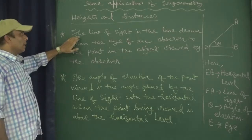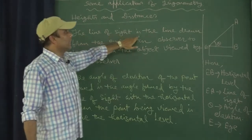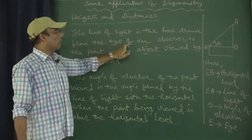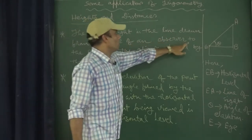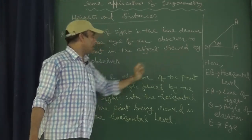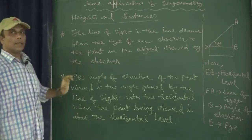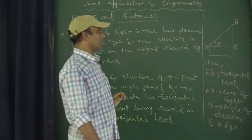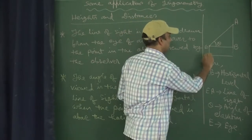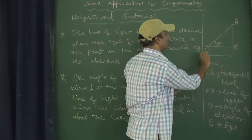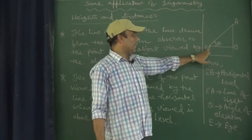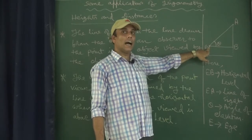First, let us understand the line of sight. The line of sight is the line drawn from the eye of an observer to the point in the object viewed by the observer. Suppose a person is standing at position EX, where E is the eye of that person.